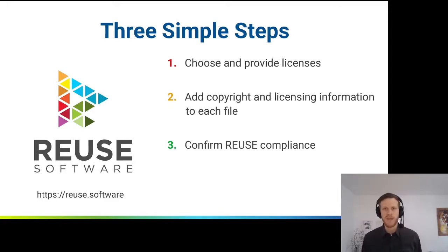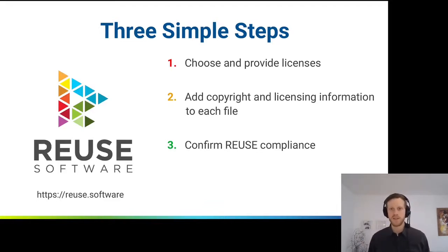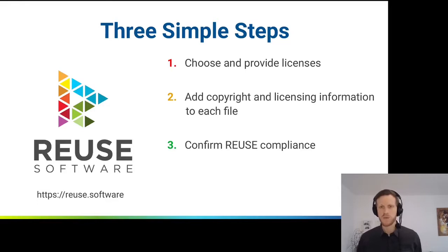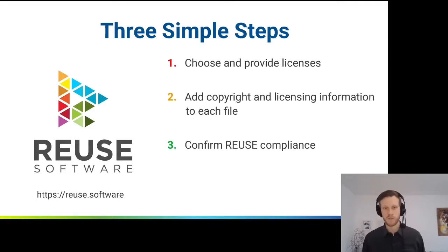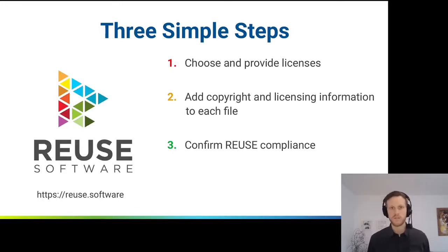So how did we do that? We came up with three simple steps. The first step is to choose and provide licenses — developers are asked to make an informed choice about the license or licenses they want to use, and to provide these licenses in a standardized form as license text files. The next step, probably the most burdensome, is to add copyright and licensing information for every single file in the repository. And the last step is to confirm REUSE compliance — ideally just a matter of one command with our REUSE helper tool.